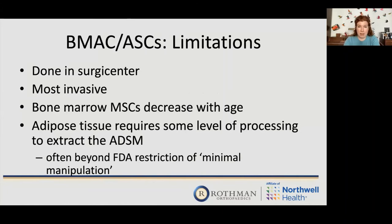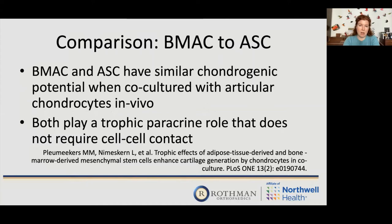Limitations of BMAC and MFAT: it is a procedure requiring a surgery center — the most invasive of the options. The harvest site can be sore. Bone marrow potential decreases with age, though individual variation matters — being a 'young 70 or an old 50' changes things. Adipose tissue requires careful processing to remain FDA compliant with minimal manipulation. Both BMAC and MFAT involve pluripotent cells that don't directly interact with the target tissue — they signal and attract the needed cells to that area.